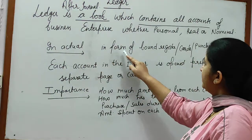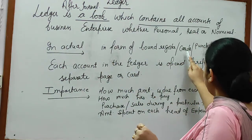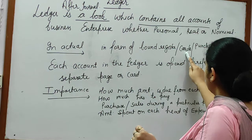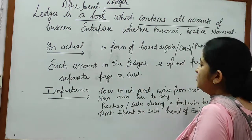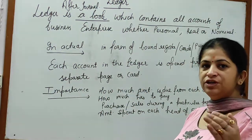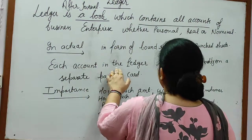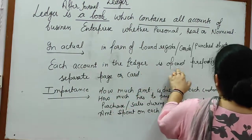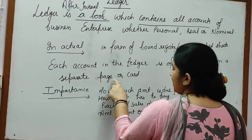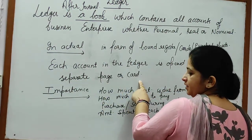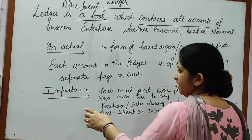In actual, it is in the form of a bound register. It can be in register form, or cards — each account having a different card — or loose sheets, every sheet for a different account. Each account in the Ledger is opened preferably on a separate page or a separate card.